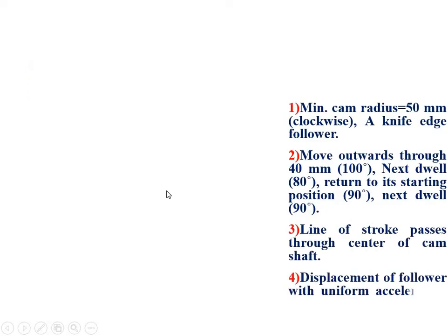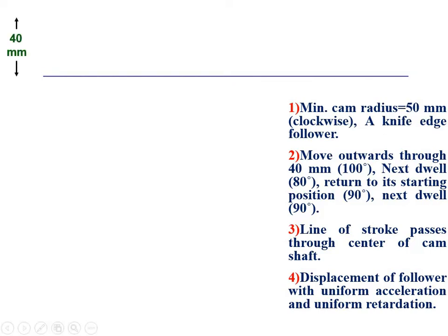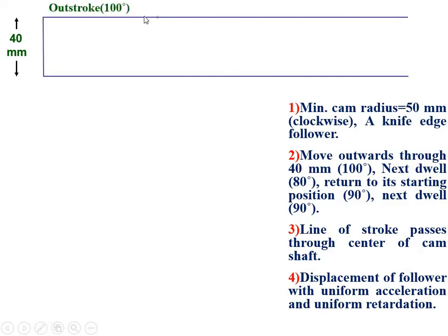Let's start with the cam profile and then discuss the numerical portion. First draw the horizontal line, then draw the vertical line with length 40 mm representing the stroke length. Then draw a horizontal line randomly and start with the outward stroke of 100 degrees. Taking a scale of 1 cm equal to 10 degrees, the length of the out stroke is 10 cm. The next dwell is 80 degrees, so the length of that line is 8 cm.